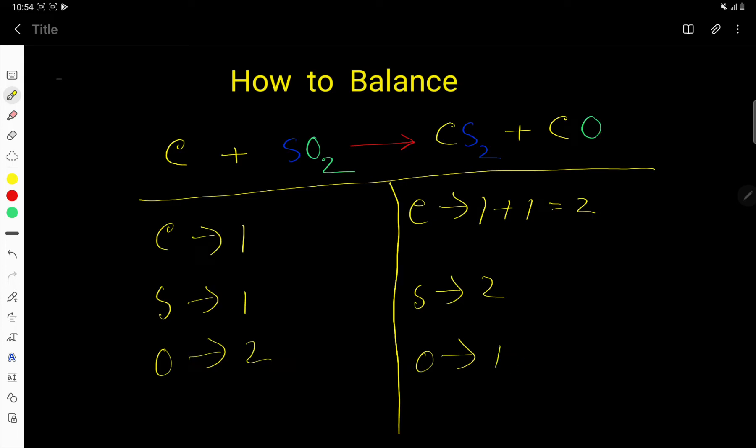Oxygen is 1. To balance this equation, you have to balance carbon, sulfur, and oxygen. If you want to balance carbon first, this may create problems because carbon is present in two compounds.